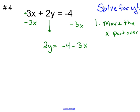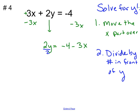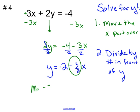And then lastly, you divide by the number in front of y. So I divide by 2, and make sure you divide each one of these by 2. So the y's cancel off. Negative 4 divided by 2 is negative 2. Negative 3 divided by 2 is just negative 3 halves. So I'm going to leave it as a fraction because now I can see that my slope is always the number in front of x. And so in this case, make sure you grab the sign. My slope is negative 3 halves.